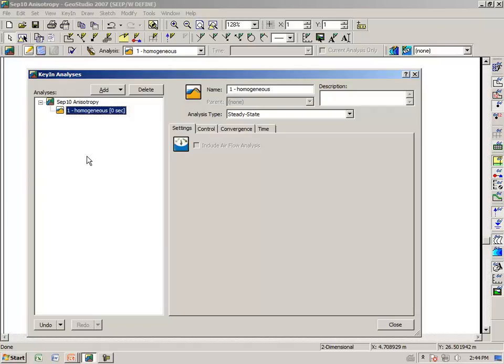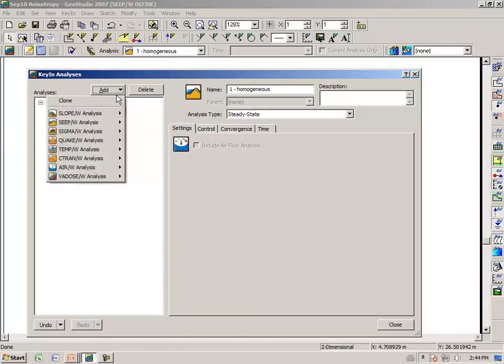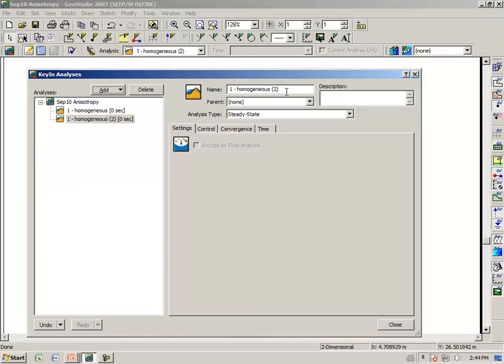Then we want to analyze a second analysis and we say clone the first one. And we will call this number two, anisotropic.